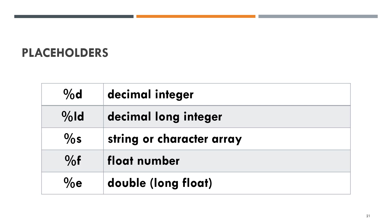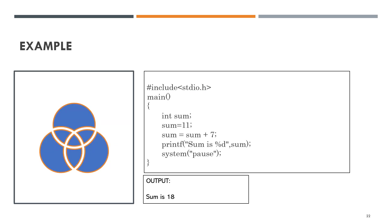Placeholders. These are the placeholders for decimal integer, decimal long integer, string or character array, float number, and double or float — a long float. This is an example of a full program in C. The program adds sum and 7, where the initial value of sum is 11, displaying the result using the printf command. The output is 18.